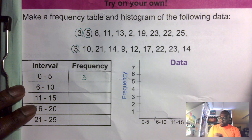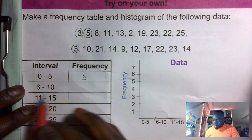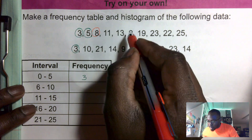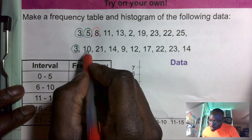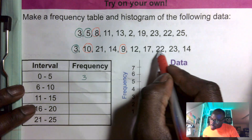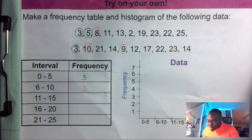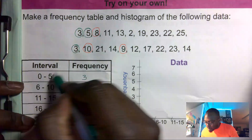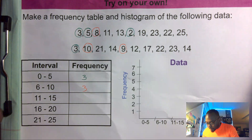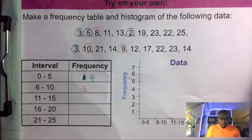Now we do six to ten — how many times does the data fall between six and ten? We get one, two, three — so we have three here. But I do have an error: there's one more number that falls between zero and five, which is two, so that interval is four, not three.